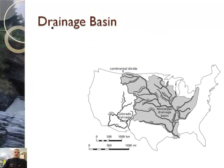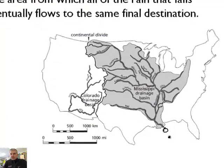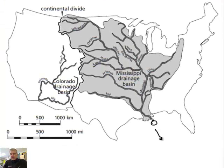Now, drainage basin. This is what I started the podcast with — what the heck is a drainage basin? A drainage basin is the area from which all of the rain that falls eventually flows to the same final destination. So the drainage basin of essentially the Mississippi River is the Gulf of Mexico.